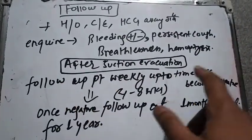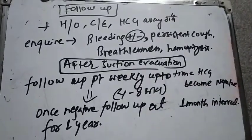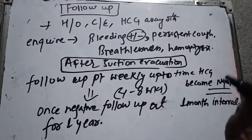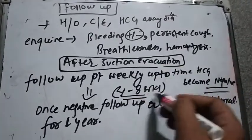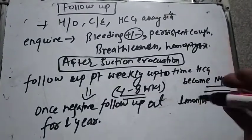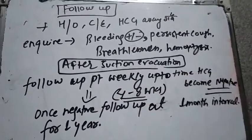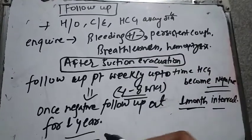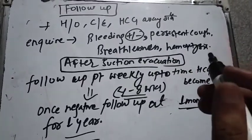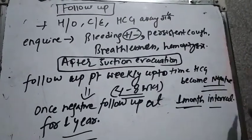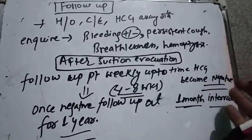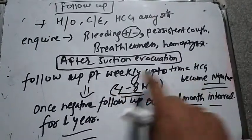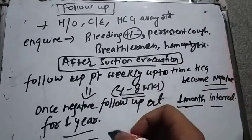We need to make the patient do a weekly follow-up until HCG becomes negative. Normally the HCG becomes negative in 4 to 8 weeks. Once HCG is negative, we then follow up at one-month intervals for 1 year.